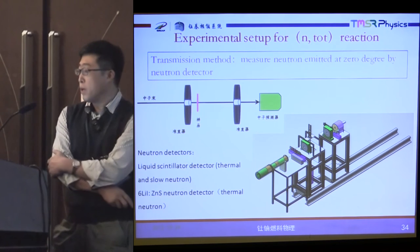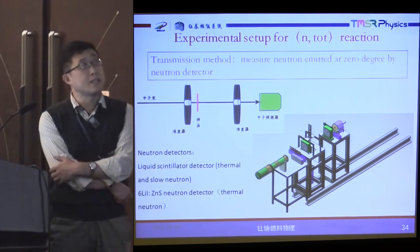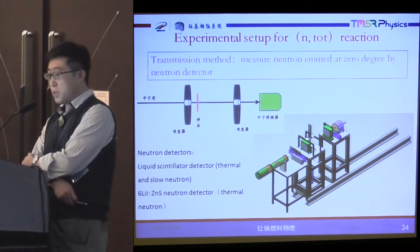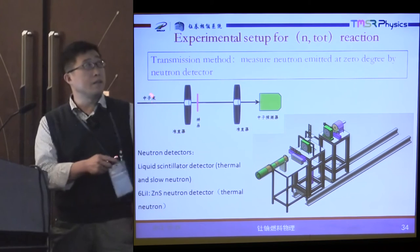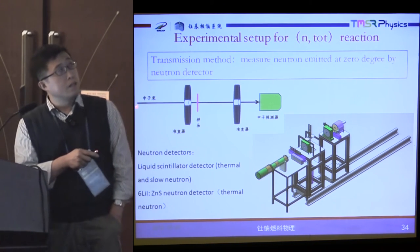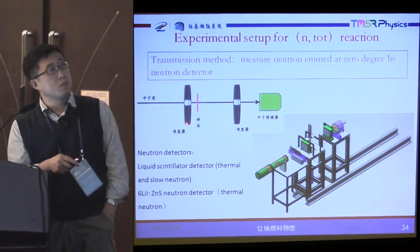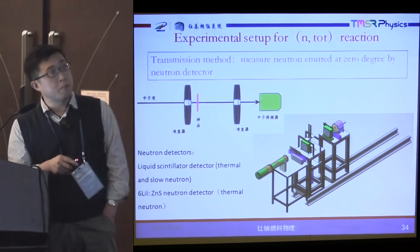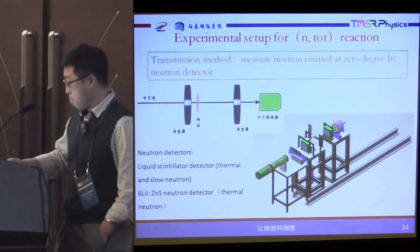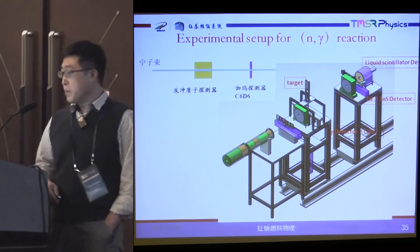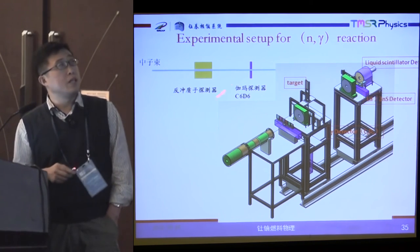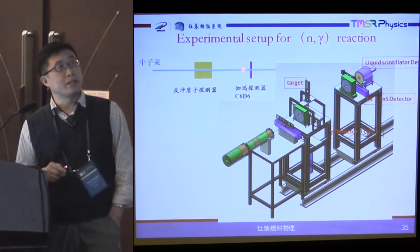Experiment setup for total reaction: we use a transmission method. Neutrons emitted at zero degrees are measured by neutron detectors. Here is the neutron beam coming from this side, here is the collimator, this is the sample, and this is the neutron detector. Experiment setup for N-gamma reaction: neutron beam, recoil proton detectors, and gamma detectors.